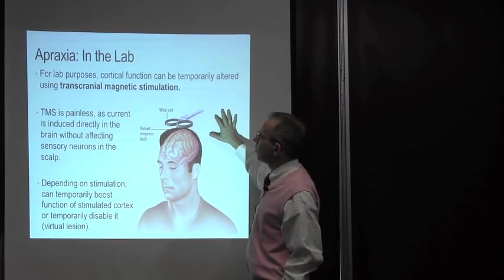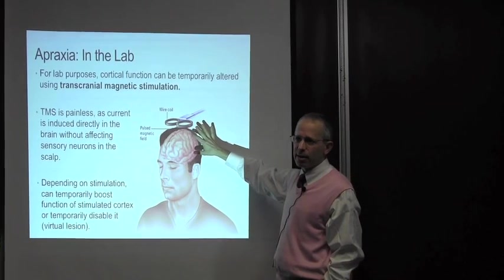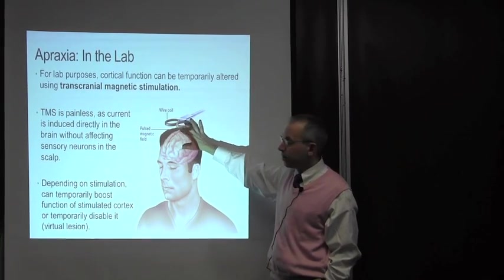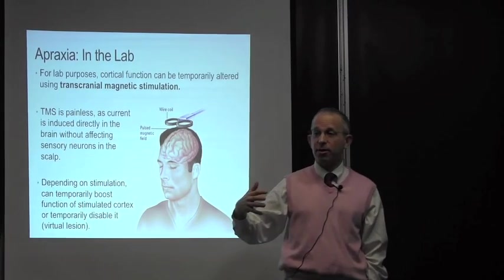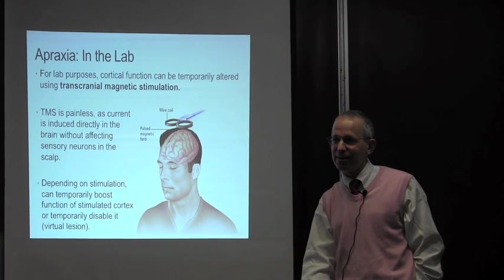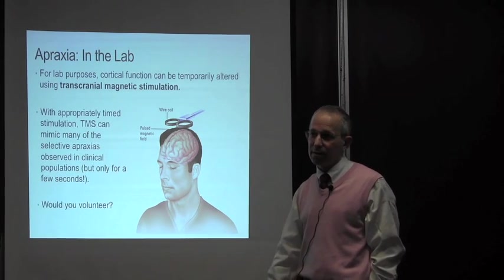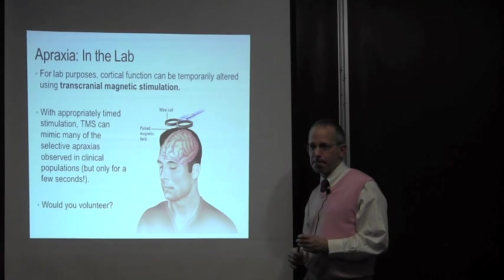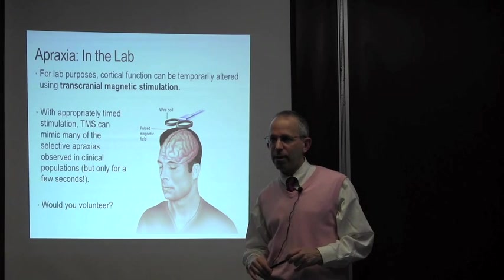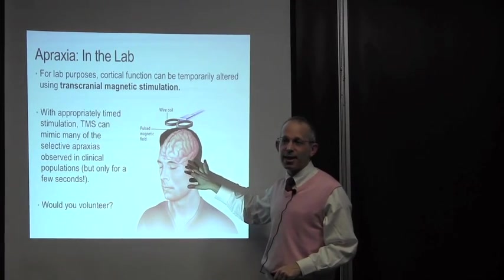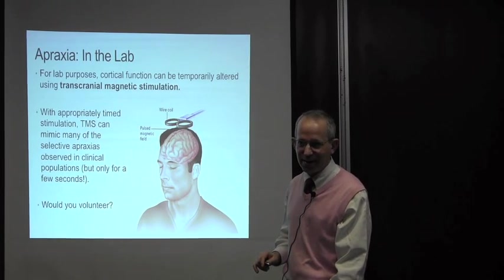Skill memory can also be impaired. You can also have difficulty recognizing performance because part of our recognition of skills is our ability to process it and imitate it internally. There have been new approaches to use transcranial magnetic stimulation. Basically TMS is a painless current induced into the brain. Depending on the stimulation and where it is, one can actually boost the cortex or disable it. Some people have used this to create selective apraxia, like creating a temporary stroke.